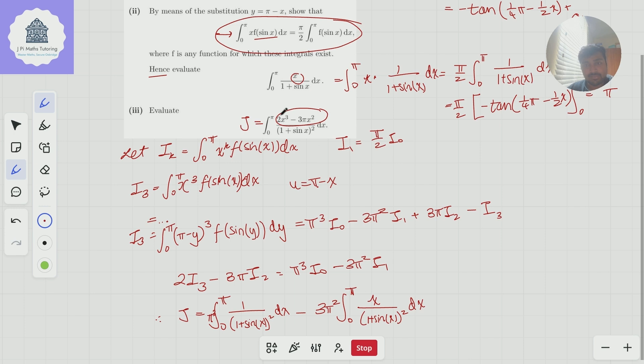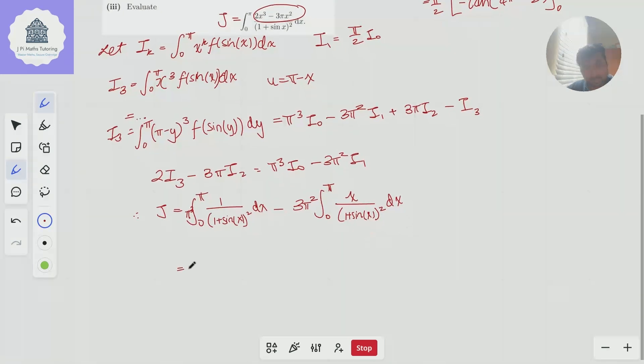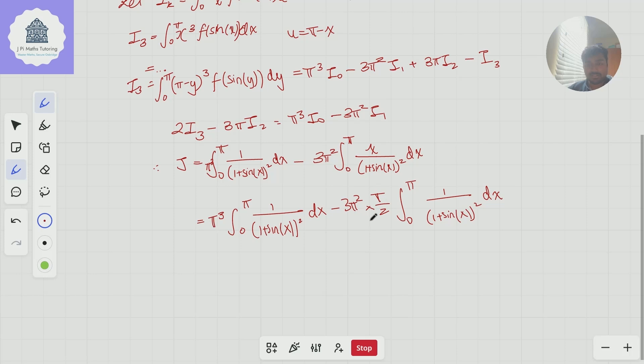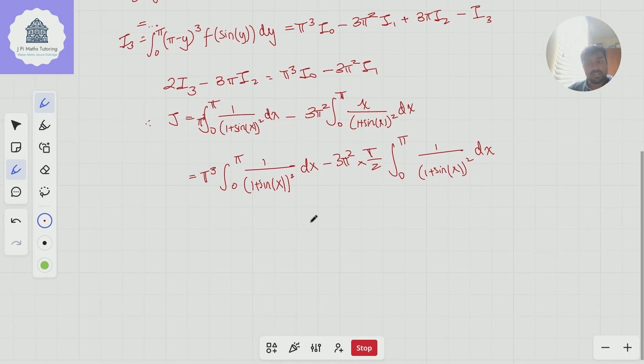So this thing here, according to this rule that I've circled up here, this integral, if I keep everything else the same, will become minus 3π squared times π over 2 times the integral from 0 to π of 1 over 1 plus sine x squared dx. Amazing. Now I can factor out this coefficient, which is π cubed minus 3π cubed over 2. So in other words, minus π cubed over 2, and then I've got the integral from 0 to π of 1 over 1 plus sine x squared dx.